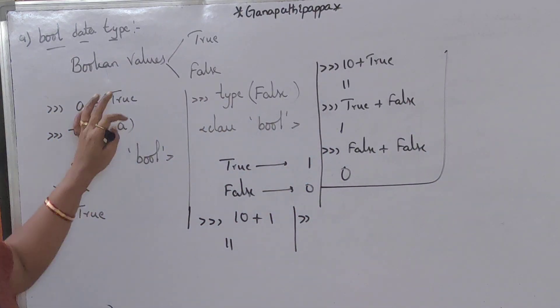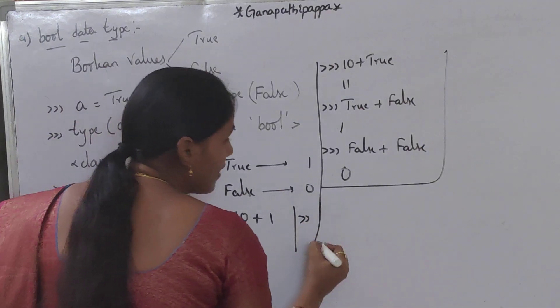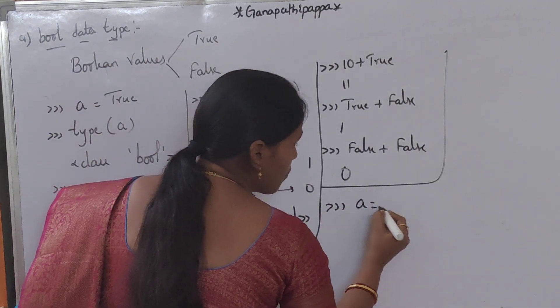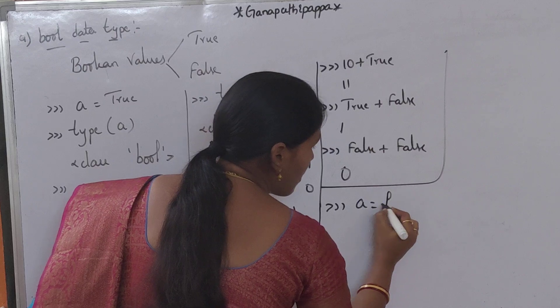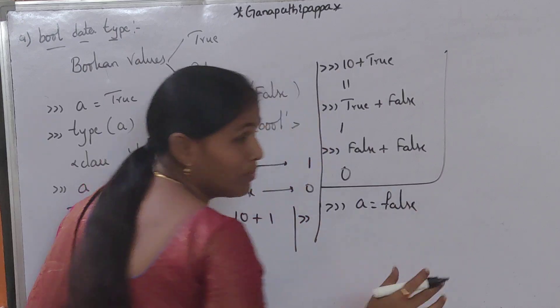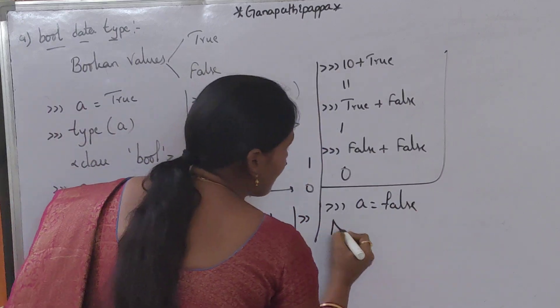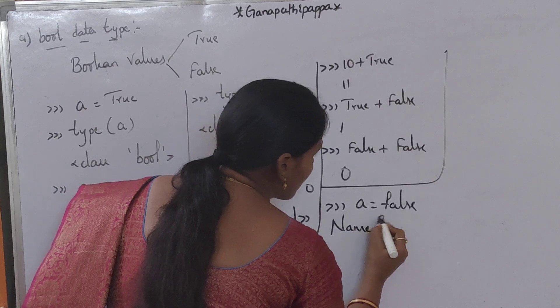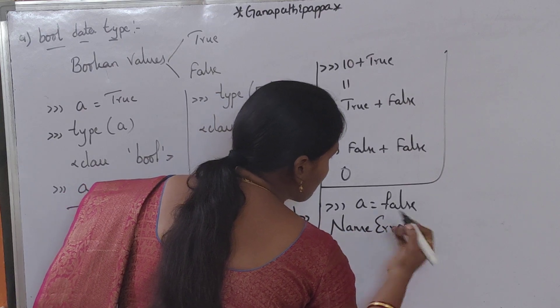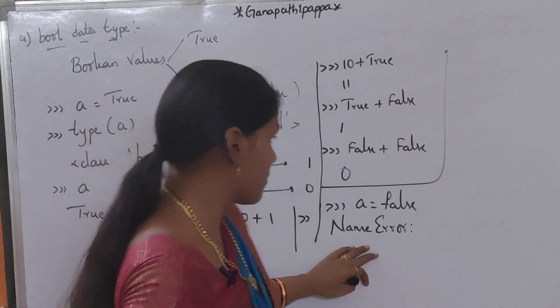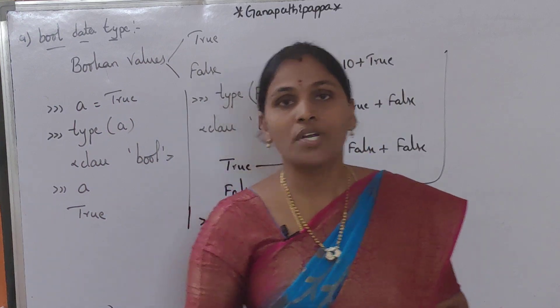Compulsory we should use capital letters. Otherwise, if we use a is equal to false with lowercase f, then immediately we will get name error. This is boolean data type.